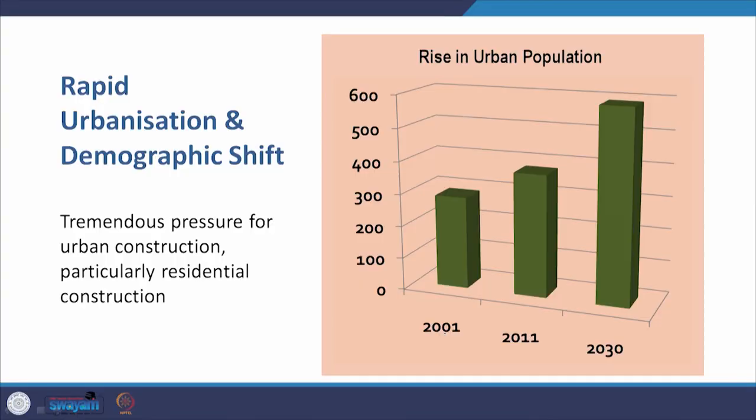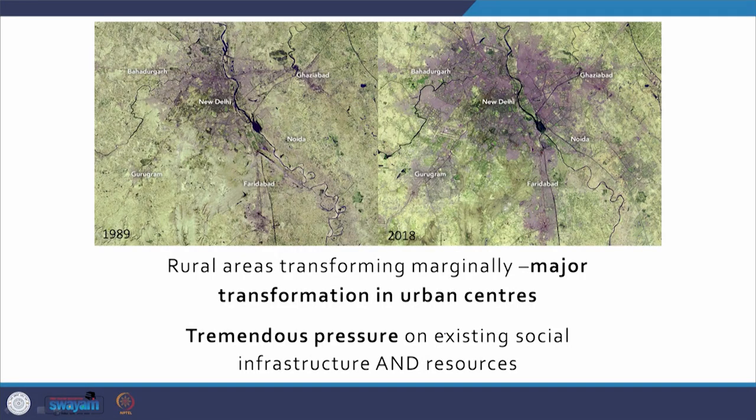The other big factor with tremendous implications for architecture is rapid urbanization and demographic shift — the tremendous pressure on urban construction, particularly residential construction. There is a rise in urban population: in 2001, our cities were occupied by around 250 million people; in 2011 this shot up to about 350 million; and it will be touching close to 600 million by 2030. A very substantial chunk of Indians will be living in cities.